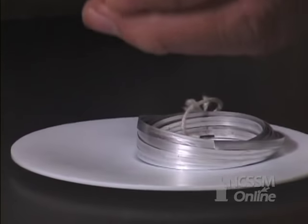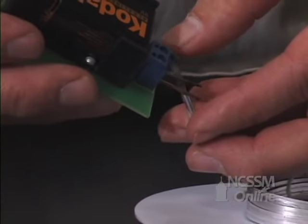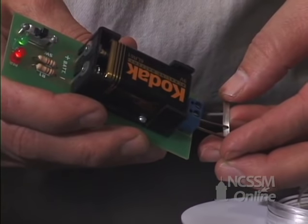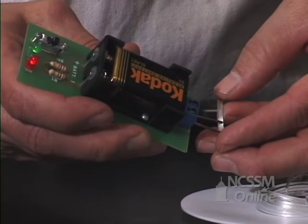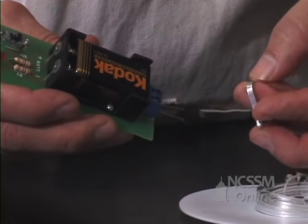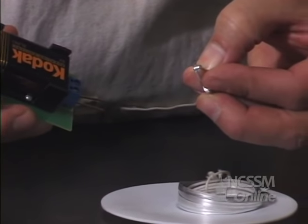The magnesium is an excellent conductor of electricity, as we can see using our conductivity tester. It's also a very malleable, flexible metal.